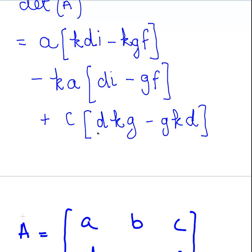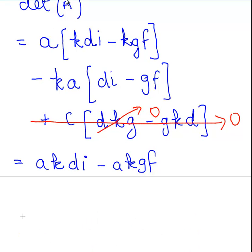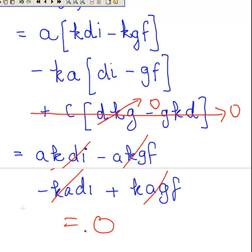Now, DKG minus GKD — those are the same, so this entire last term goes to zero immediately. What we're left with is: A times K times DI minus A times K times GF, minus K times A times DI, plus K times A times GF. This cancels with this, and this cancels with this, leaving zero. So the determinant of that matrix is zero.